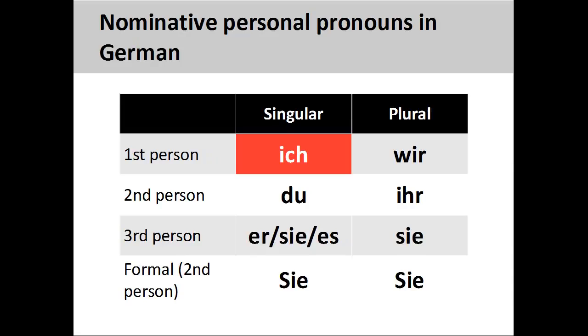When teaching German personal pronouns, I like to introduce them as actors on a stage. The first person to appear on the stage is ich, I, the first person singular personal pronoun.